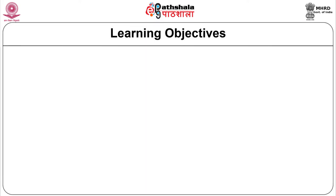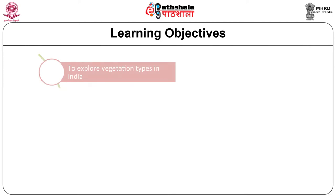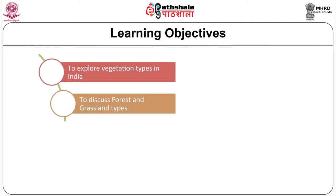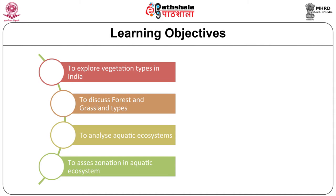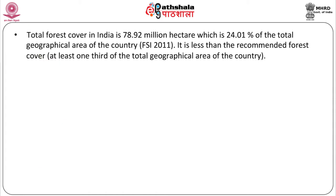In this module, we are going to study about the distribution and ecology of all the ecosystems of India. The learning objectives of this module are vegetation types of India, forest and grassland types, analysis of aquatic ecosystems, and assessment of zonation in aquatic ecosystems. The total forest cover in India is 78.92 million hectares, which is 24.01% of the total geographical area of the country. It is less than the recommended forest cover of at least one third of the total geographical area of the country.